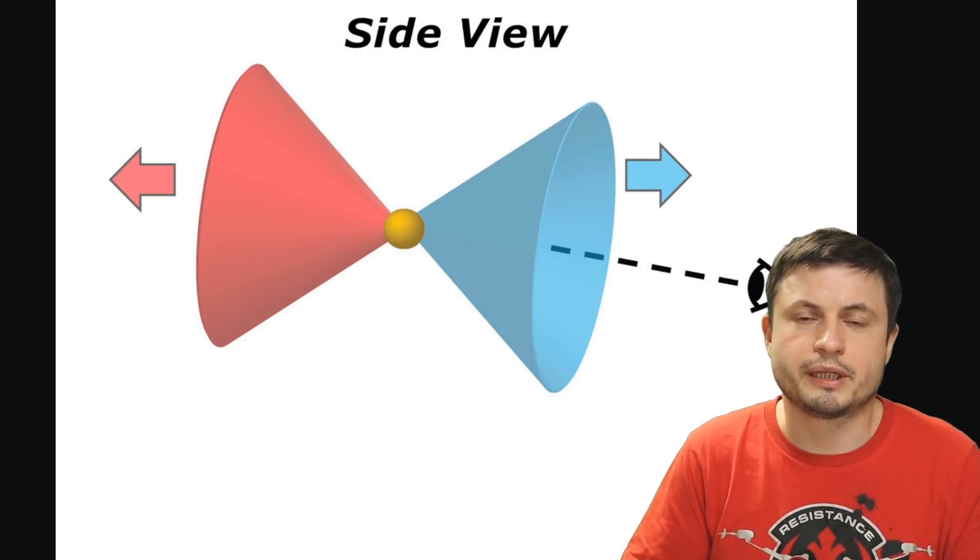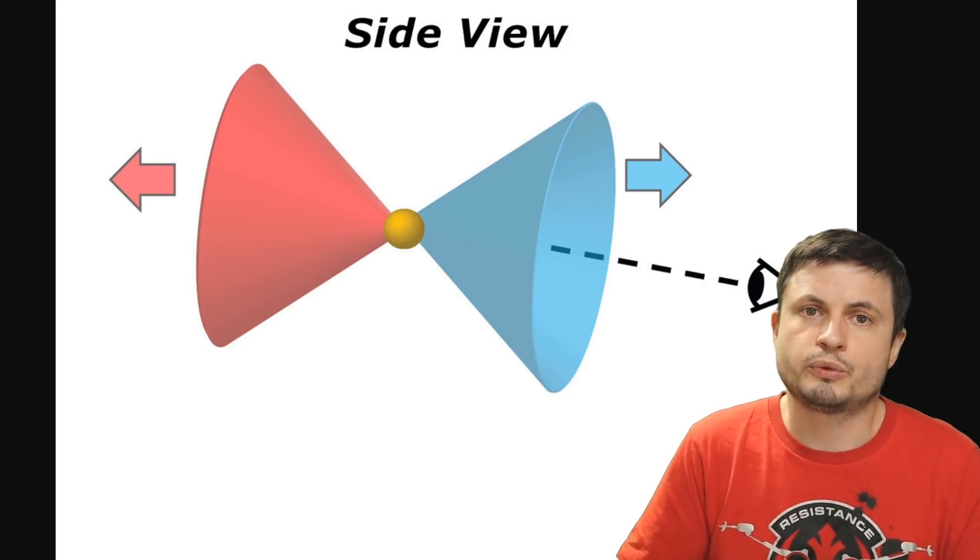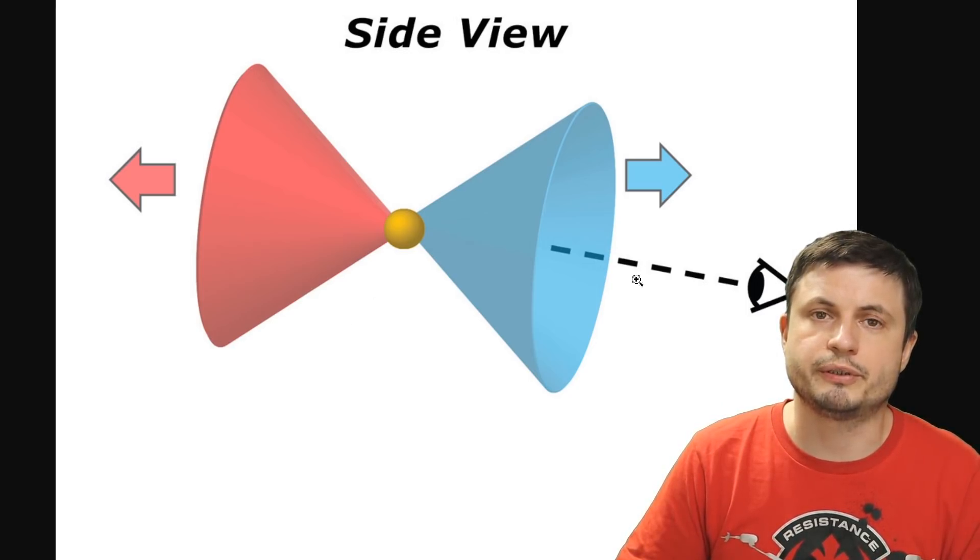And so when these two cones formed they started to propagate in two directions in opposite directions with relatively equal velocity creating something similar in essence to what you see right here.